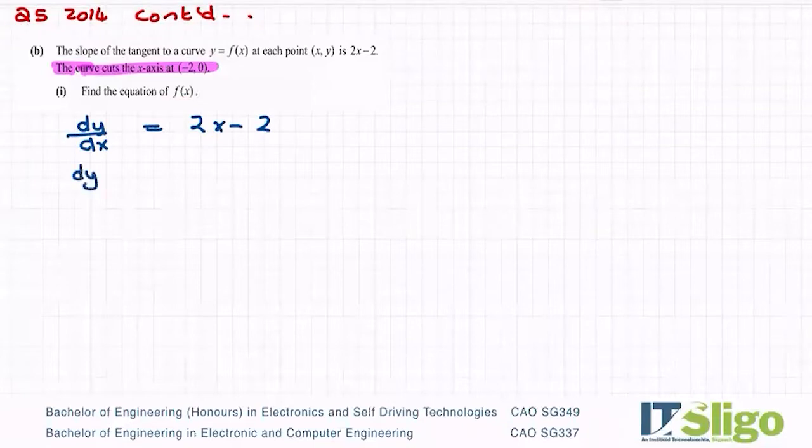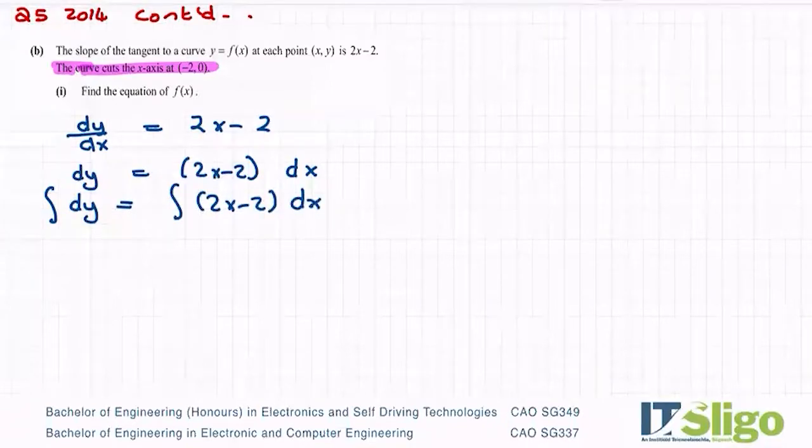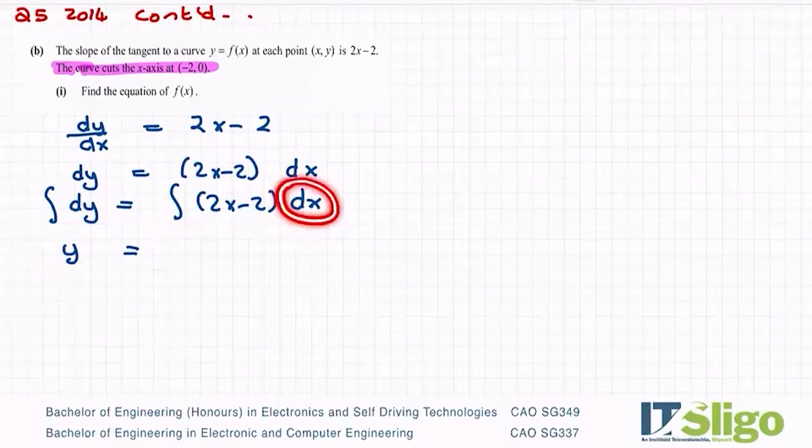So to do this, I would write dy equal to 2x minus 2 times dx. And then if I get the integral of both sides, you end up with y, because the integral of dy gives you y. And this is where this comes out of and this is why there's always a dx at the end of it. So it's equal to the integral of 2x minus 2 times dx. And of course, we know that f of x is y, so me solving for y is solving for f of x.